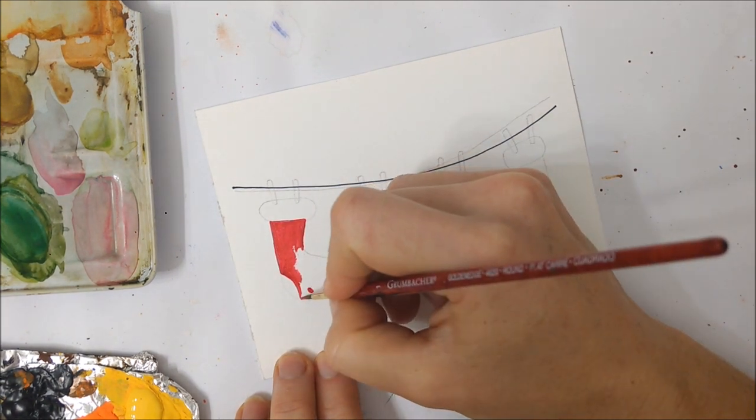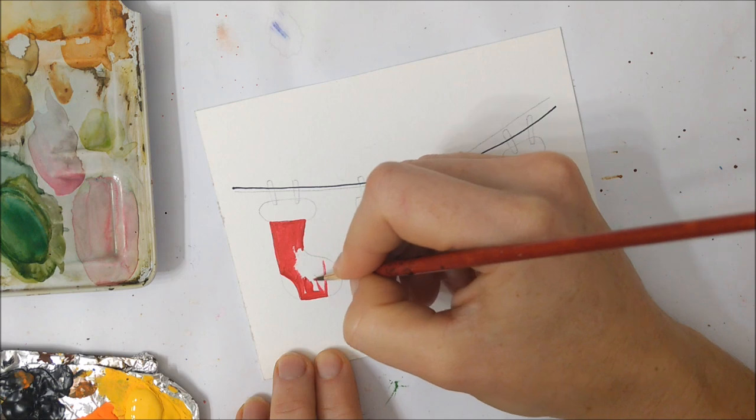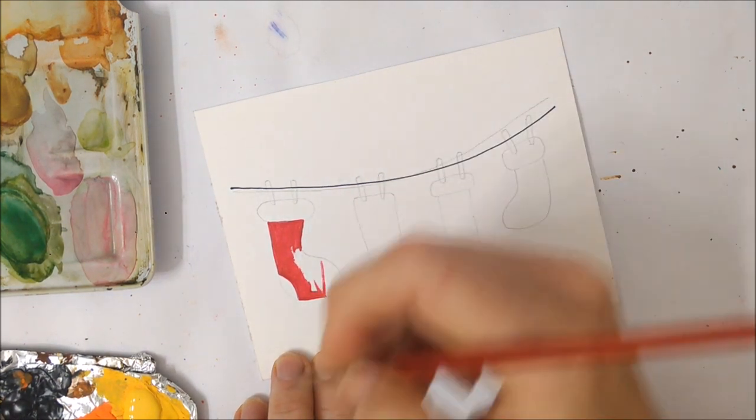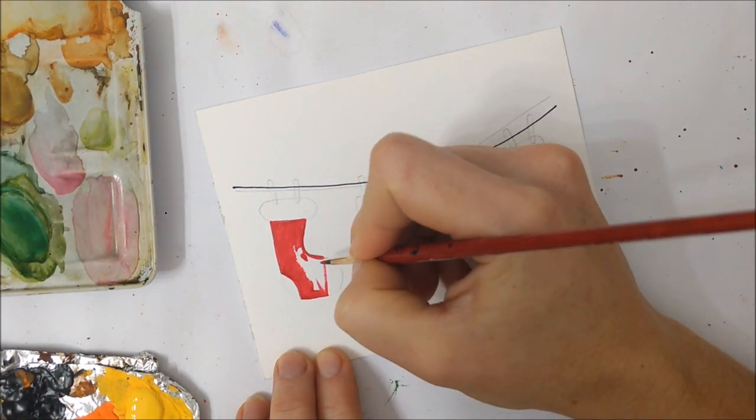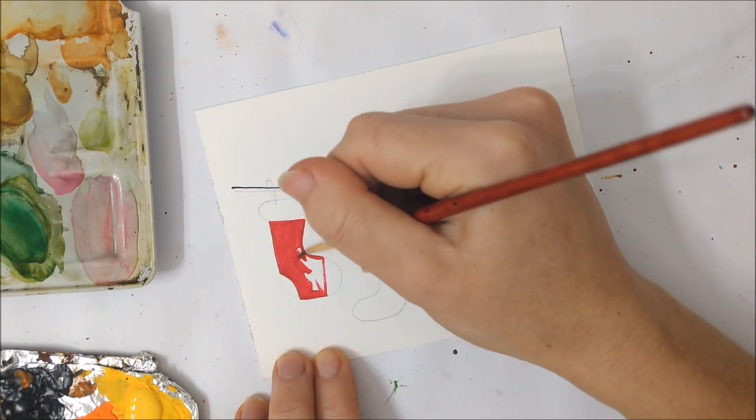The first thing you want to do is use a fine tip marker or a black pen to draw a concave line stretching horizontally from left to right. This is where our stockings are going to be hanging off of.